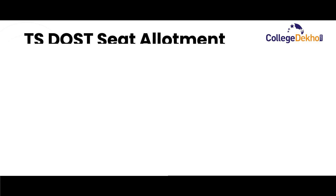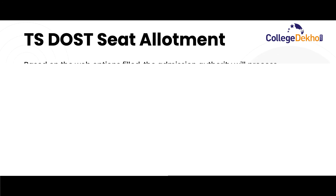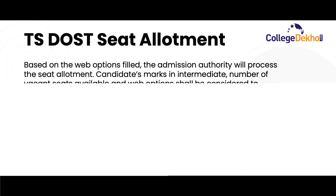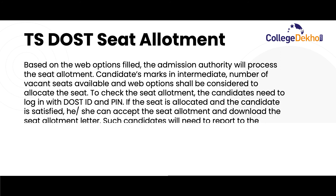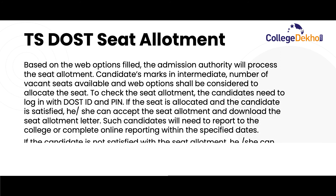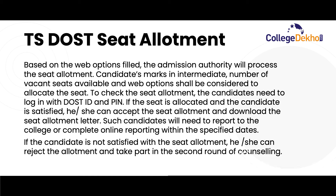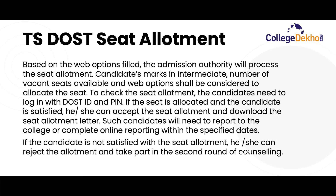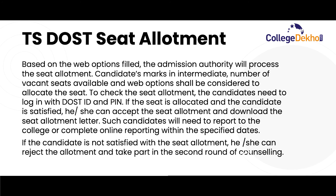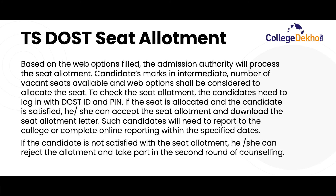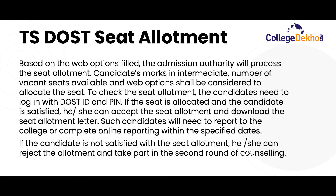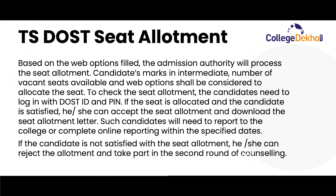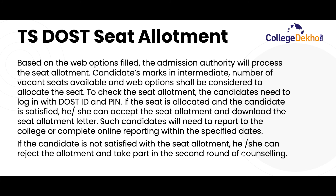TS DOST seat allotment: based on the web options filled, the admission authority will process the seat allotment. Candidates' marks in intermediate, number of vacant seats available and web options shall be considered to allocate the seat. To check seat allotment, candidates need to log in with the same DOST ID and PIN. If the seat is allocated and the candidate is satisfied, he or she can accept the seat allotment and download the seat allotment letter, and then report to the college or complete online reporting within specified dates. If the candidate is not satisfied, he or she can reject the allotment and take part in the second round of counselling.